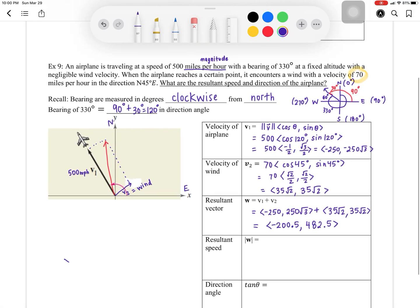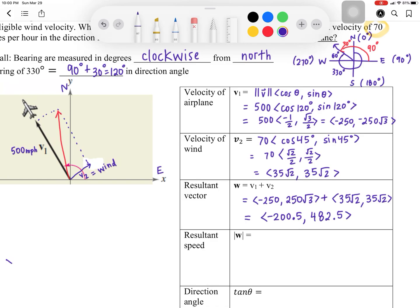Now, how do you find the speed? Well, speed is a scalar. So you're just going to take the square root, take your negative 200.5, square it, and then plus 482.5, and square it. That's going to give you 522.5, what's your units, miles per hour.